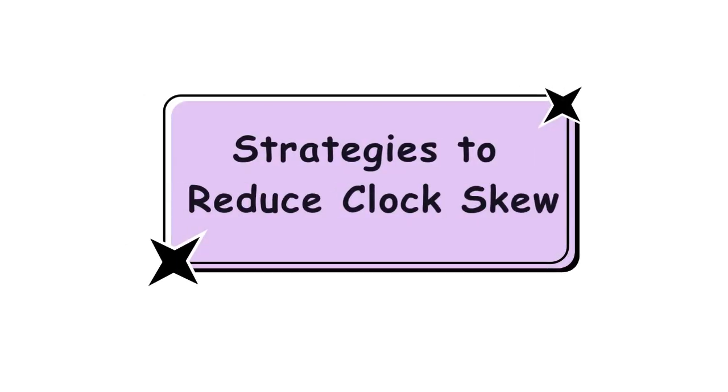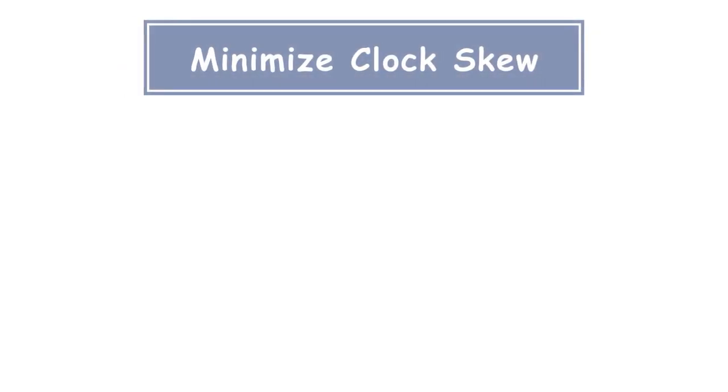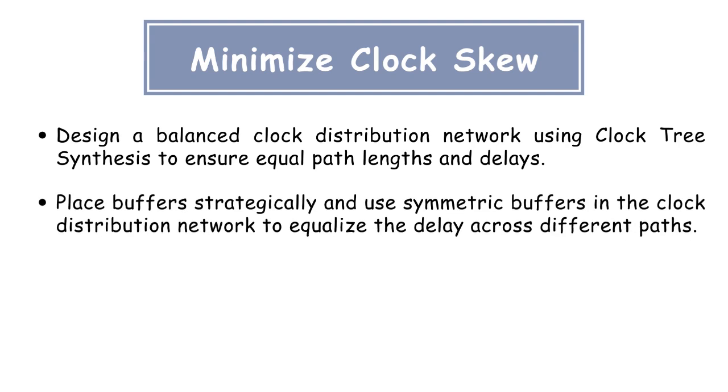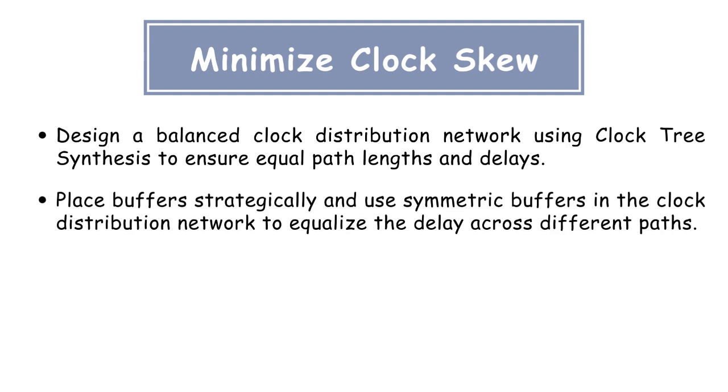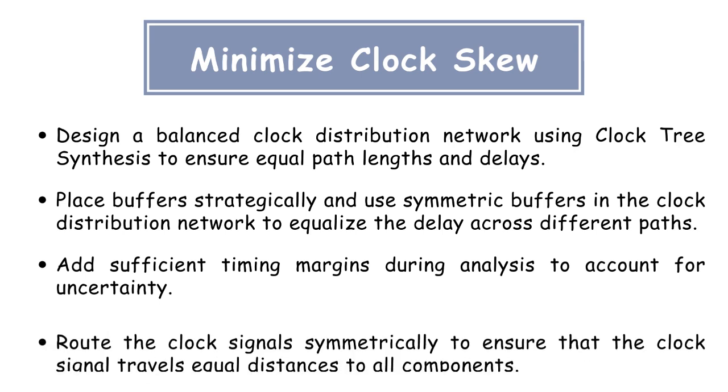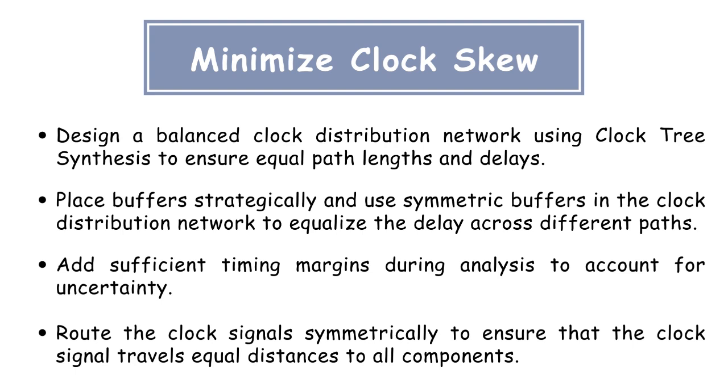Finally, let's see the strategies to reduce clock skew. To minimize clock skew, here are some important considerations that we, as designers, should keep in mind. Design a balanced clock distribution network using clock tree synthesis to ensure equal path lengths and delays. Place buffers strategically and use symmetric buffers in the clock distribution network to equalize the delay across different paths. Add sufficient timing margins during analysis to account for uncertainty. Route the clock signal symmetrically to ensure that the clock signal travels equal distances to all components.